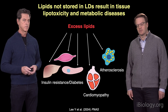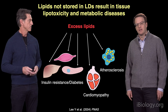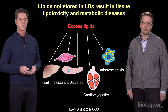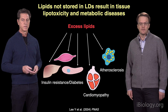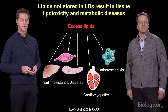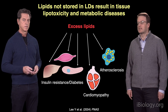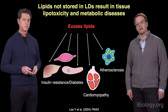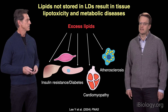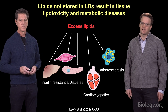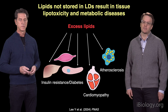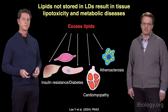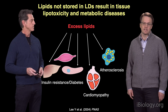This has led to a term known as lipotoxicity, first coined by Roger Unger in the 1980s. In some cases this results in diabetes, and in other cases, cardiovascular diseases such as cardiomyopathy and atherosclerosis are the consequence of overaccumulation of lipid and lipotoxicity.